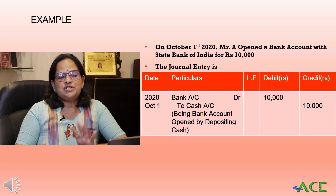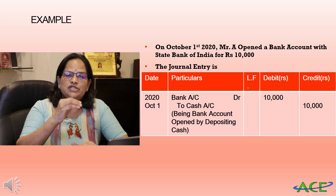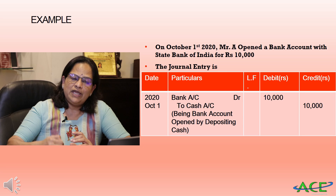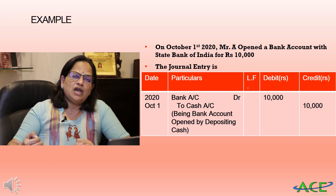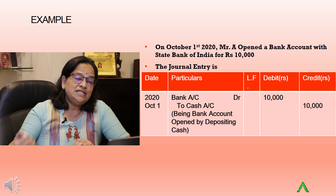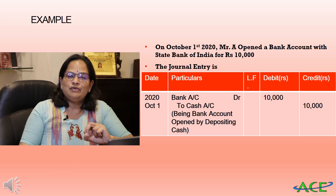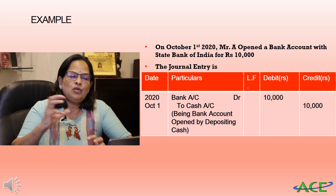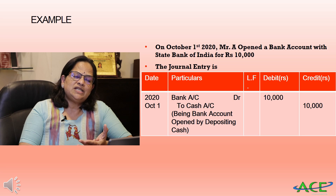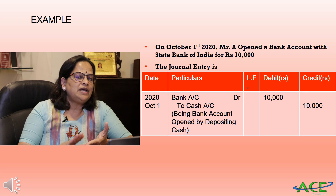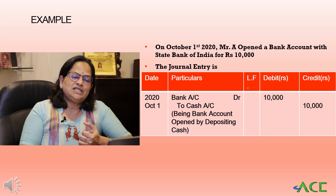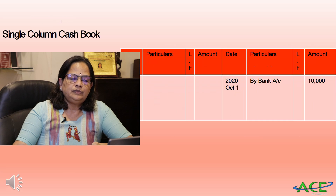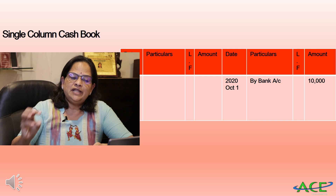Now I will explain the importance of contra entry and why in triple column cash book we don't have to maintain cash and bank accounts separately. On October 1st, 2020, Mr. A opened a bank account with State Bank of India for rupees 10,000. The journal entry for this transaction is: Bank Account Dr. 10,000 / To Cash Account 10,000. In single column cash book, we write in the amount column — 'By Bank' 10,000 — as there is only an amount column.